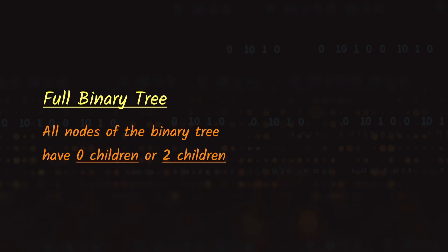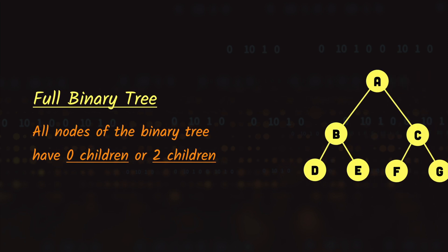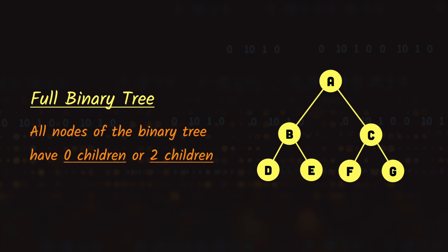A full binary tree is the type of binary tree in which each node of the tree has either no children or two children — no children or exactly two children. We can't have a node with one child. If you look at this tree, you can see that all the nodes have either two children or they are leaf nodes with no children. Because it follows the properties of a full binary tree, we can say that this tree is a full binary tree.